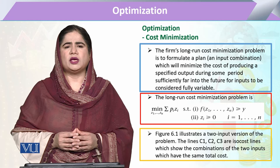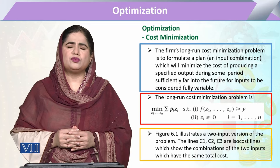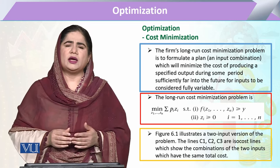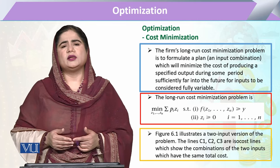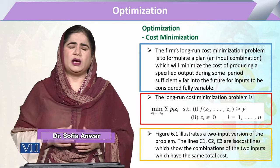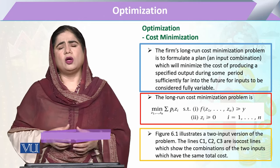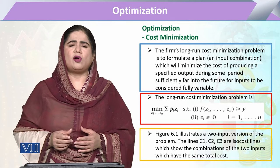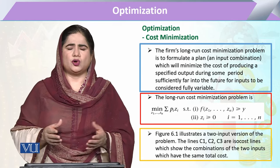In cost minimization, the first concept is that we look at which variables the firm or production setup is using — either there will be one variable, more variables, or it will be a two-variable case. We also consider the shape of those variables: either all variables are variable (they can be varied), or any variable is a fixed factor, meaning it will not change throughout the study period — or we can say it will not change in the short term.